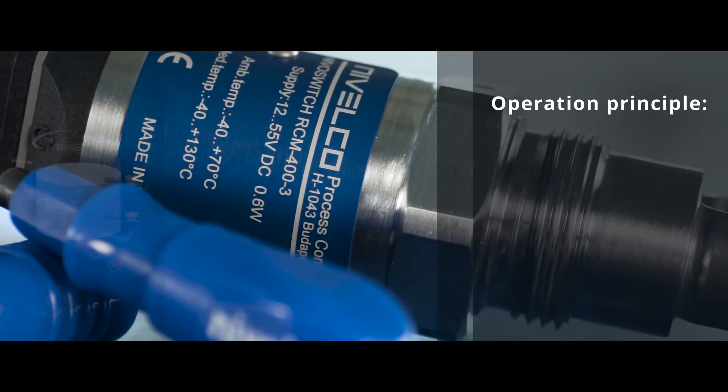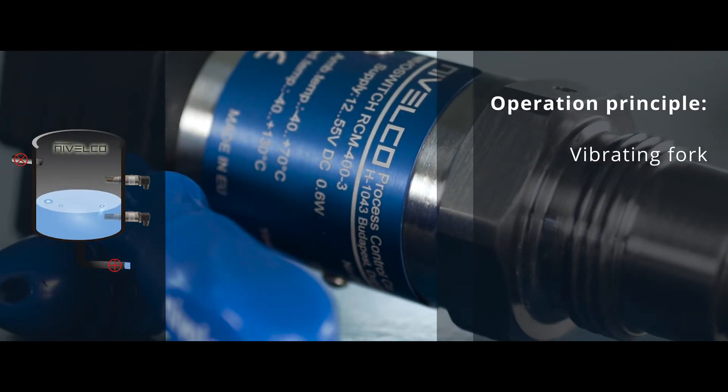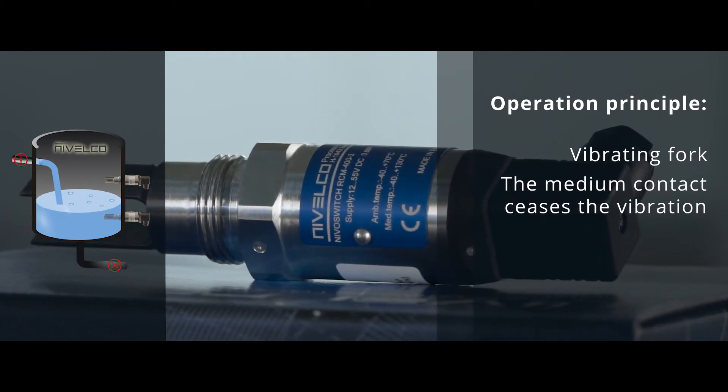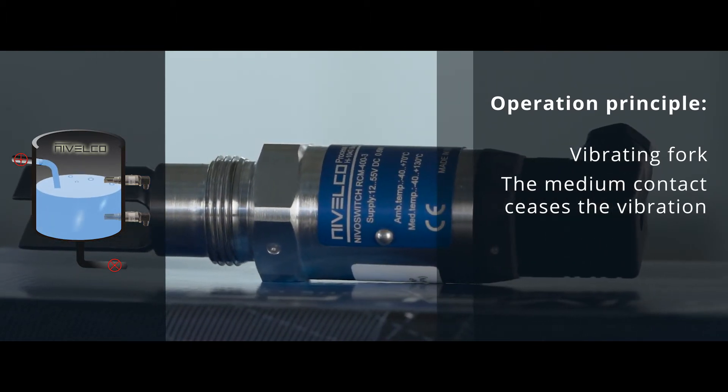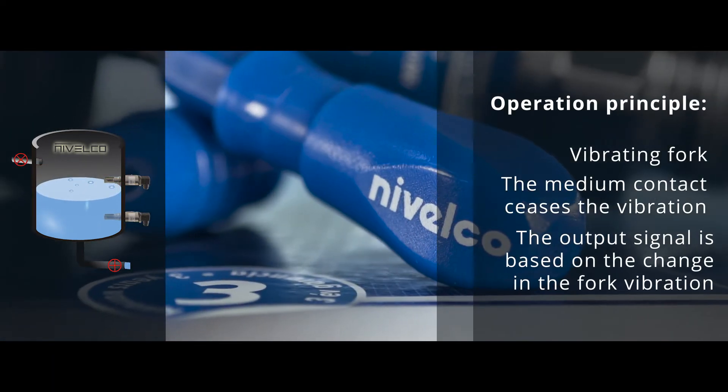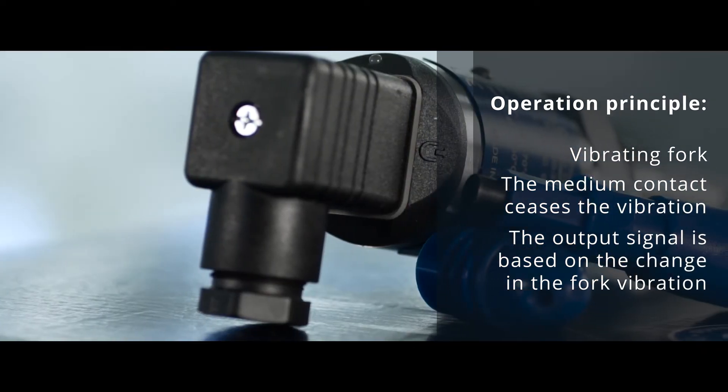The operation principle is based on that the electronic circuit excites a vibration in the fork probe. When the medium reaches and covers the fork, its vibration changes or stops. The fork will start vibrating again as the medium sets it free. The electronics sense the change of vibration and give output signal after a selected delay.